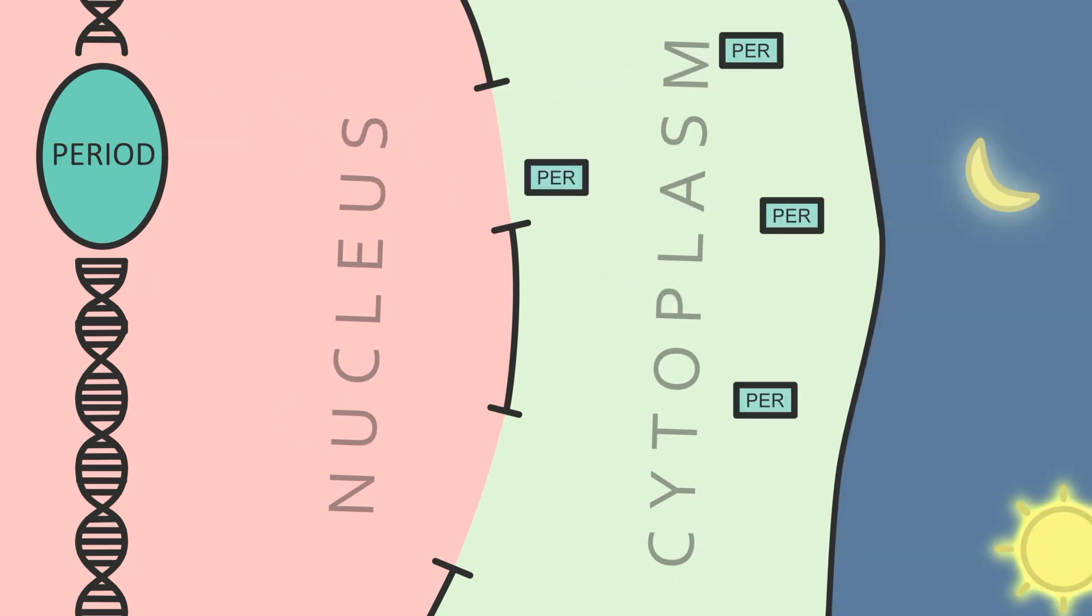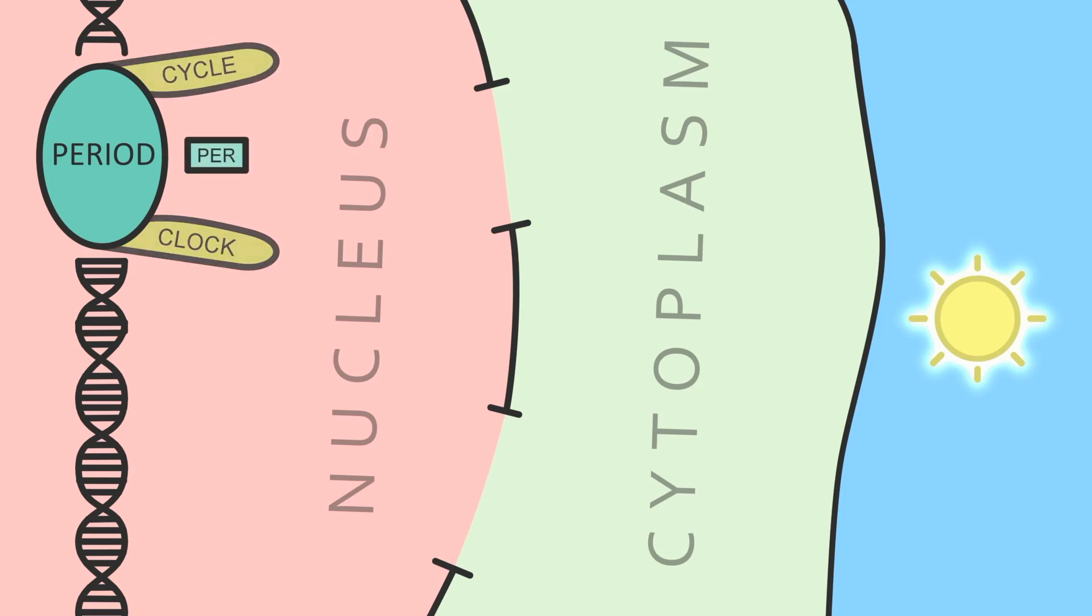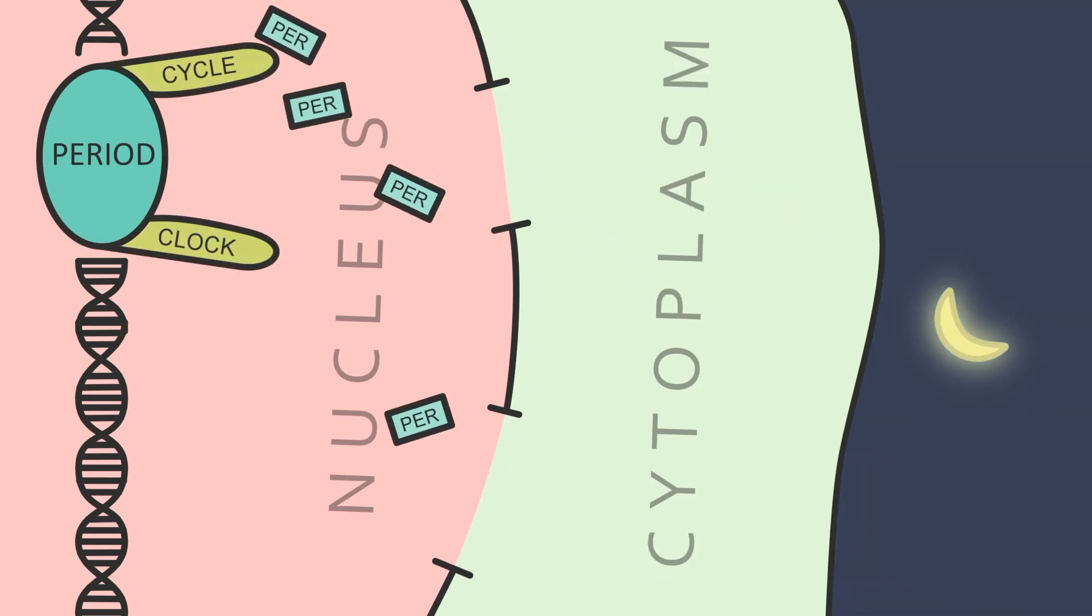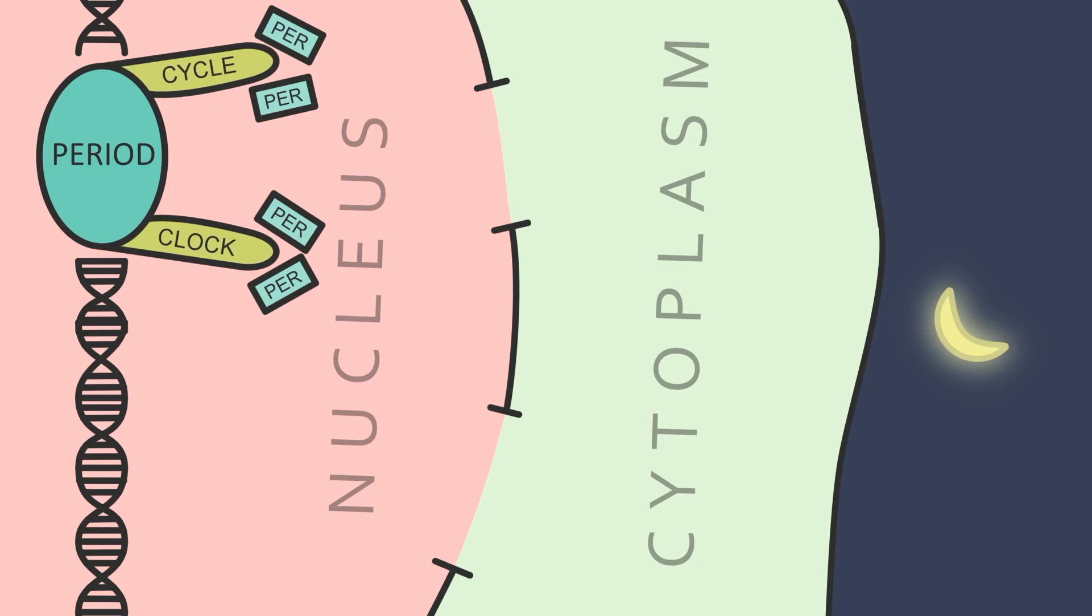That's a basic summary. We'll rewind and add more detail. There are two other genes involved called cycle and clock, which help period make PER. Without them, the period gene can't make PER. When PER returns to the cell nucleus, it actually disables cycle and clock. Disabling them disables PERIOD, which stops the PER production.